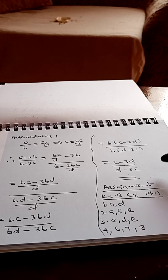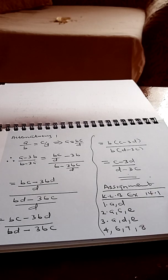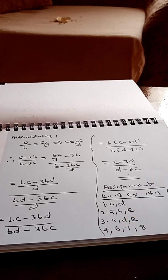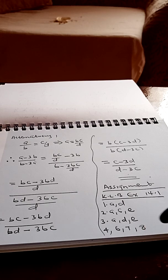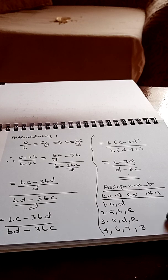Our lesson on proportion ends there. For your assignment, use the KLB book, Exercise 14.1. Number 1: do questions A and D. Number 2: do A, C and E. Number 3: do A, D and E. Also do numbers 4, 6, 7 and 8. Do those questions before the next lesson. Take care and stay safe.